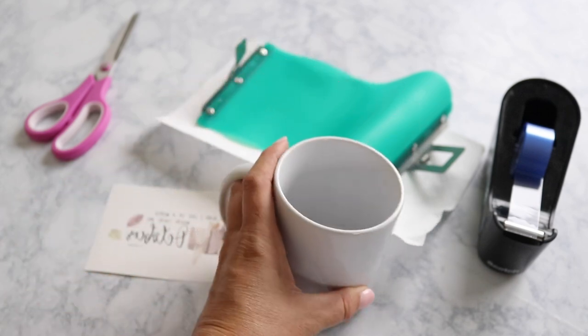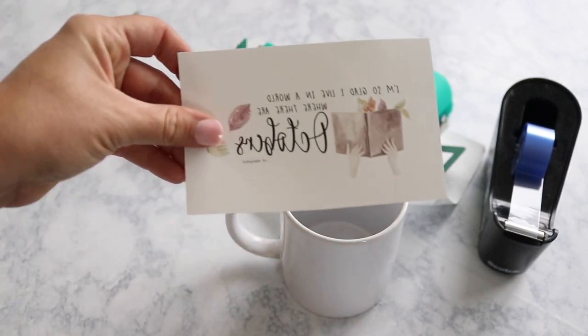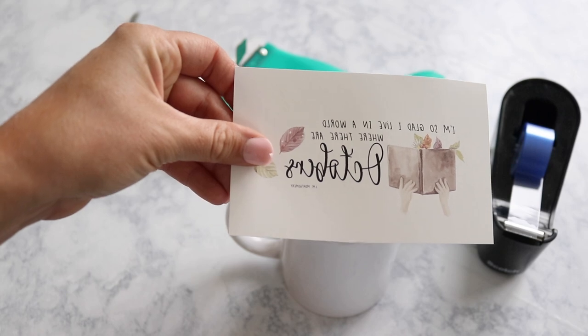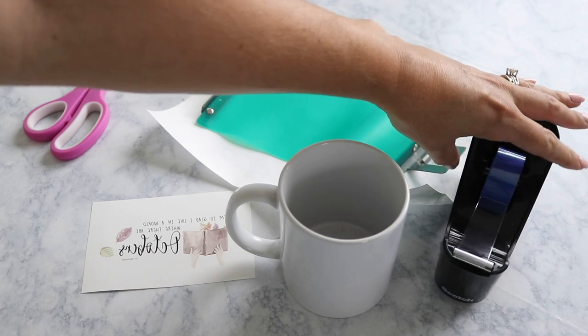So you're going to need a sublimation mug. I picked this one up at Michael's and the next thing you're going to need is something to sublimate onto it. So I printed off this little design. I made it in Silhouette Studio.